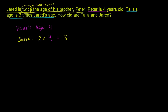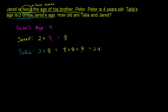And then finally, they say Talia's age — it's three times Jared's age. We were able to figure out Jared's age: it is eight. So it is three times eight. Your multiplication tables really are one of those things in mathematics that you should just know, because it'll make the rest of your life very simple. You could view three times eight as literally eight three times: eight plus eight plus eight. Eight plus eight is 16, and 16 plus eight is 24. So three times eight is 24.